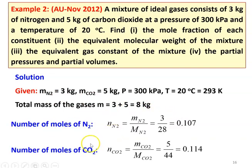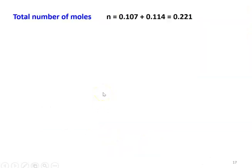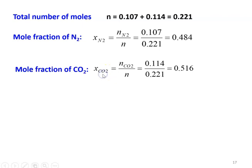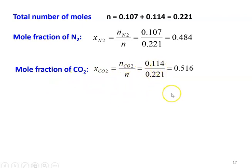Number of moles of N2: NN2 equals mass divided by molecular weight — 3 divided by 28 equals 0.107 kmol. Number of moles of CO2 equals 5 divided by 44 equals 0.114 kmol. Total moles N equals 0.107 plus 0.114 equals 0.221. Mole fraction XN2 equals 0.107 divided by 0.221 equals 0.484. Mole fraction of CO2, XCO2 equals 0.114 divided by 0.221 equals 0.516.